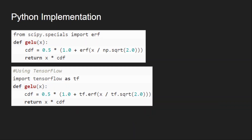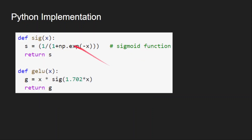For Python implementation, there are two approaches. The first uses the erf function available in SciPy, TensorFlow, and PyTorch to implement the original GELU definition. The second implements the sigmoid approximation from scratch: sigmoid is 1 divided by 1 plus e to the minus x, and GELU is x times sigmoid of 1.702x.